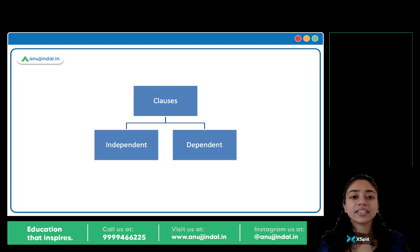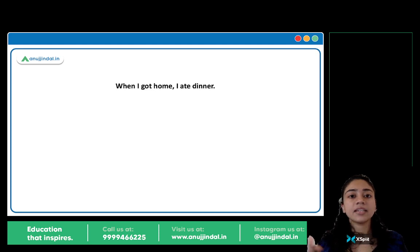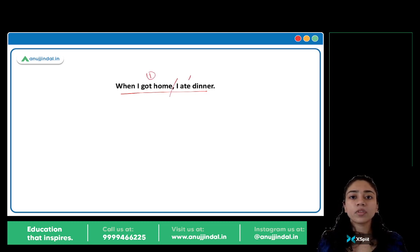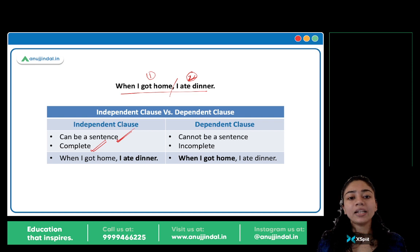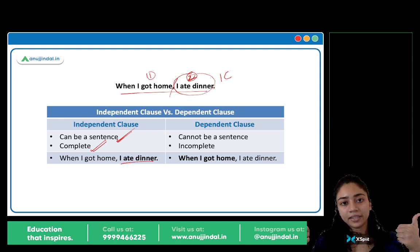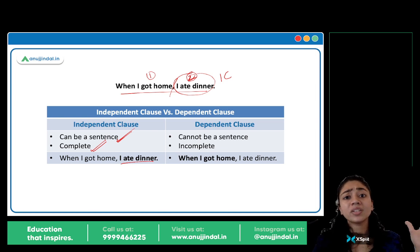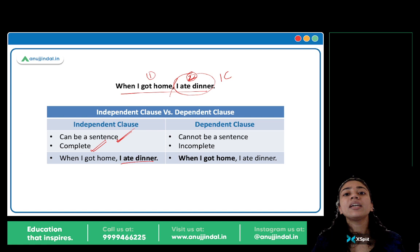Clauses are of two types: independent clause and dependent clause. Let's take an example: 'When I got home, I ate dinner.' There are two clauses here. An independent clause can be a sentence on its own — it makes complete sense. 'I ate dinner' is our independent clause — it is understandable on its own, it makes complete sense, it doesn't need anything further added. It can stand on its own.